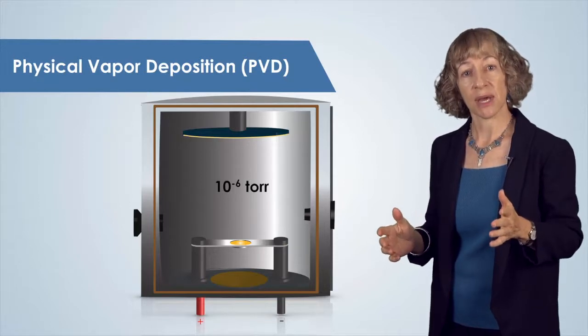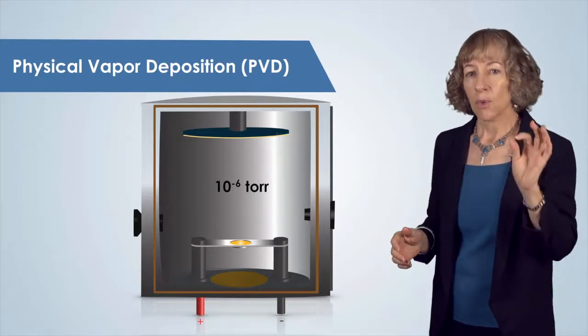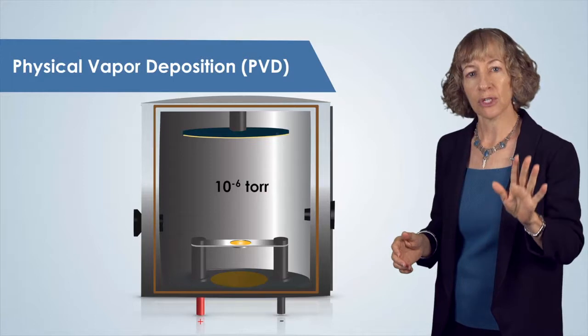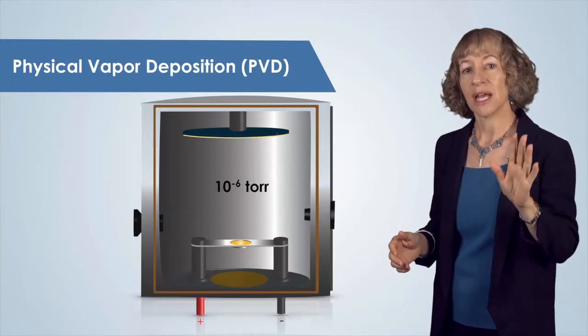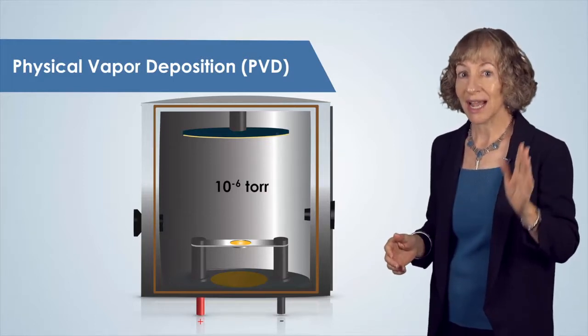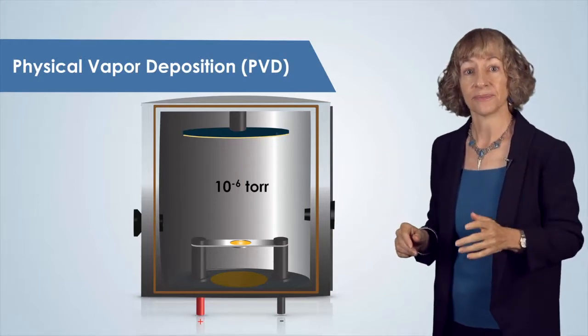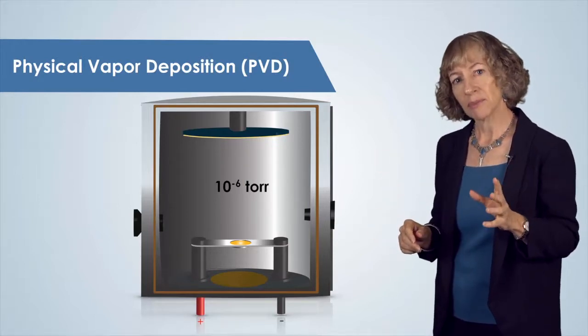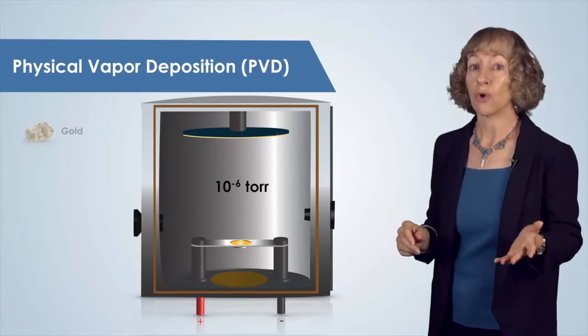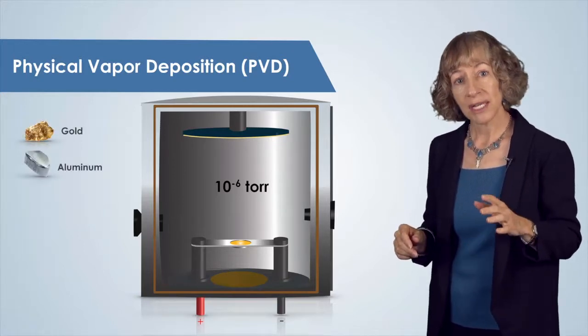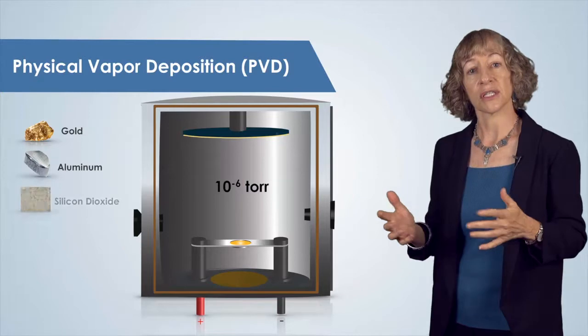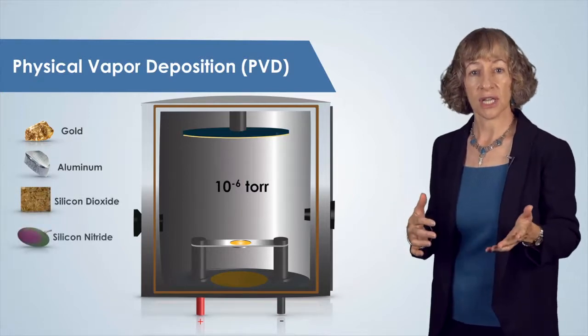We also require high purity source materials, typically 99.999% pure, 5 nines, or even better. These high purity materials include metals, such as gold or aluminum, or an insulator or dielectric, such as silicon dioxide or silicon nitride. These are available by purchase from many sources.